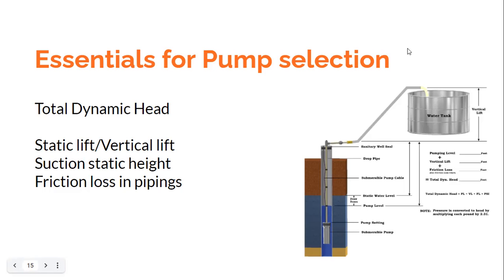You must understand that the submersible pump is submerged in the well, and the depth of the well from the ground is different from the level of the water from the ground. The water level is always higher than the bottom of the well, assuming there is water in the well. We need to take the level of the water in the bore well or open well for calculating the static water level. The static water level is measured from the level of the water in the well up to the surface of the ground — that is the suction static height or suction static head.